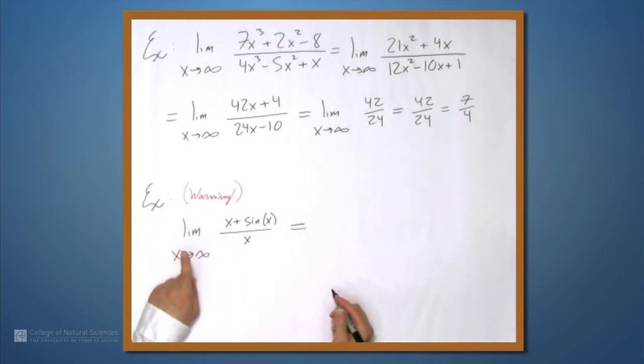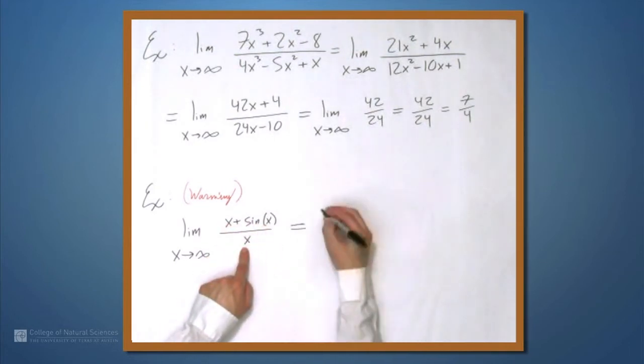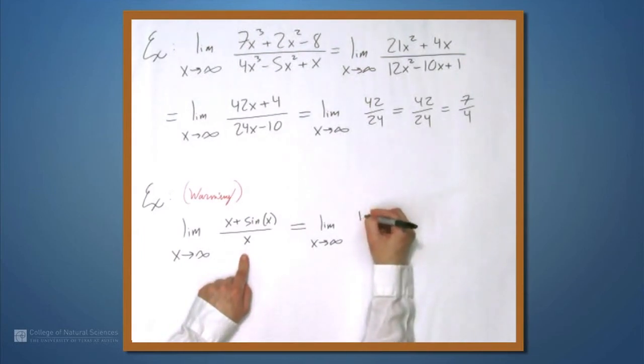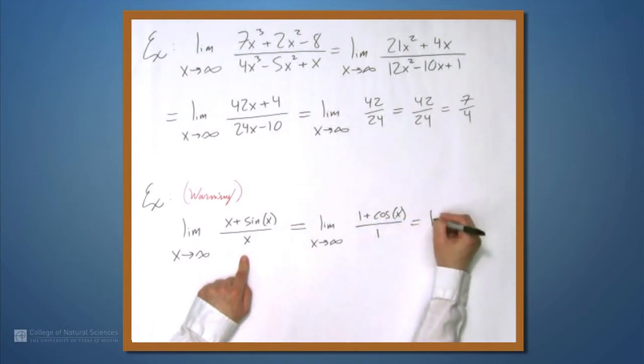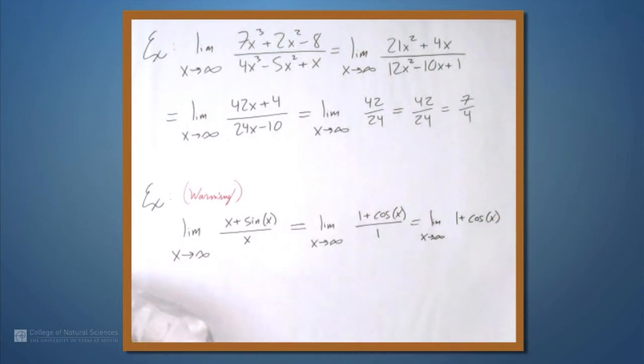But what happens if we try to apply L'Hopital's rule? Well, we can apply it, at least the first part, because we see that the numerator is going to infinity as is the denominator. So, this, according to L'Hopital's rule, is the limit as x approaches infinity of 1 plus cosx over 1, which is the limit as x approaches infinity simply of 1 plus cosx, but this very much does not exist.